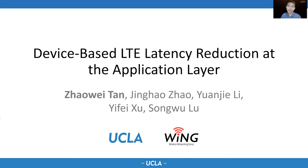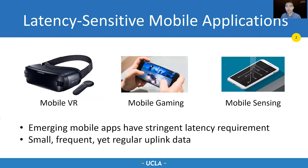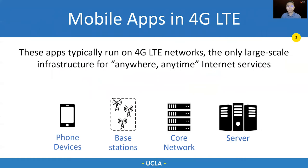Low latency is critical to many emerging applications, such as mobile VR, gaming, and sensing. They all require low latency for proper functioning. These applications collect data from sensors and upload them to the cloud or edge servers for further processing, and the sensors typically produce small data periodically. These applications usually run on 4G LTE networks that offer universal coverage and seamless mobility. LTE has a mobile access network with base stations that cover different areas and a core network that manages the user state and connects the access network to the internet.